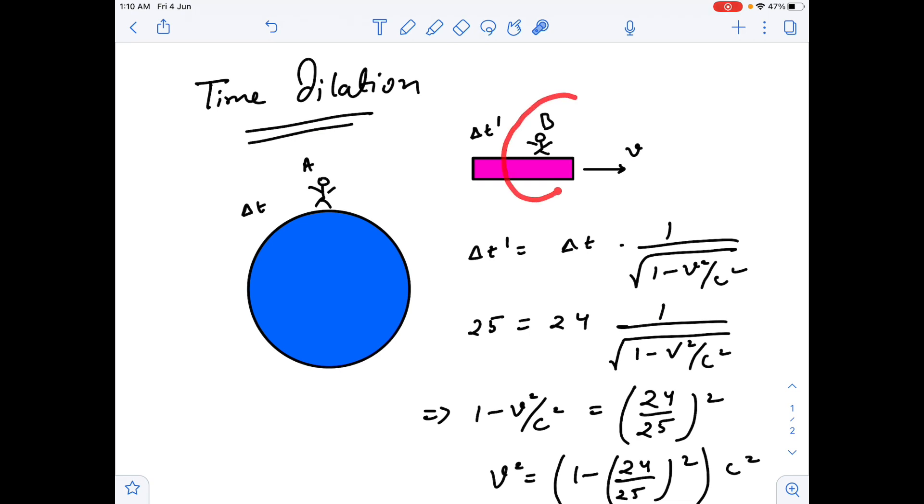So if delta t prime is the time interval that I am observing while standing on the earth for this spaceship, and delta t is the time interval which I am observing for the clock which is already present on the earth, those two time intervals will follow this specific formula.